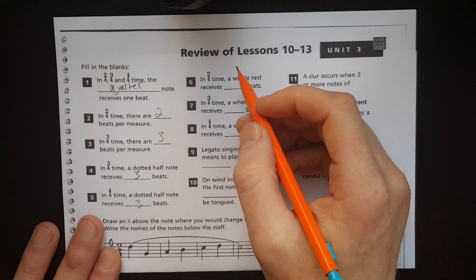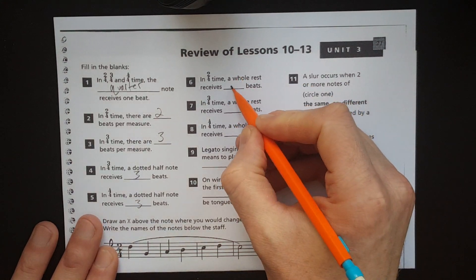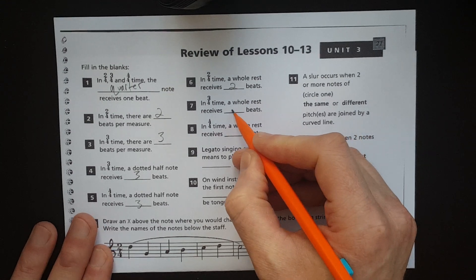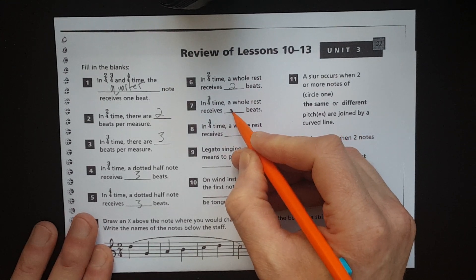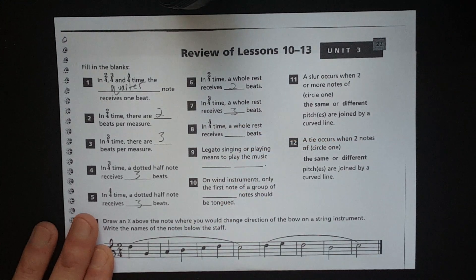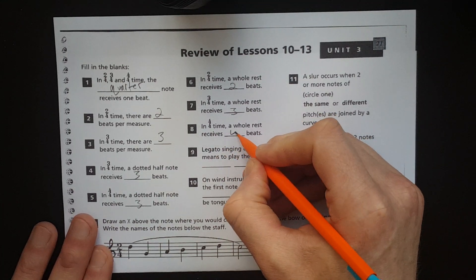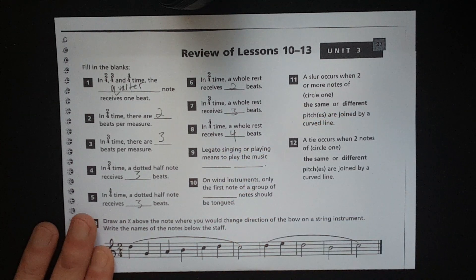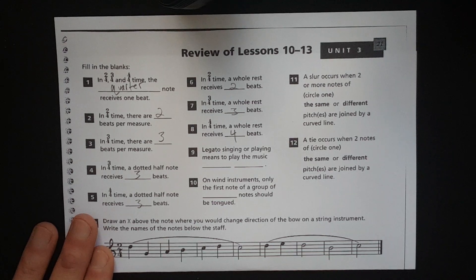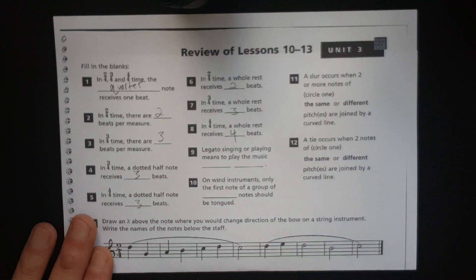Number six. In 2-4 time, a whole rest receives two beats. In 3-4 time, a whole rest receives three beats. Right? Remember, that whole rest is kind of a weird one, where depending on the time signature, it takes up the whole measure. So, it changes the number of beats depending on the time signature.